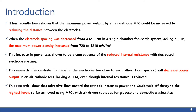This research demonstrates that moving the electrodes too close to each other will decrease power output in an air cathode MFC lacking a PM, even though internal resistance is reduced. This research also showed that advective flow toward the cathode increases power and coulombic efficiency to the highest levels so far achieved using MFCs with air-driven cathodes for glucose and domestic wastewater.